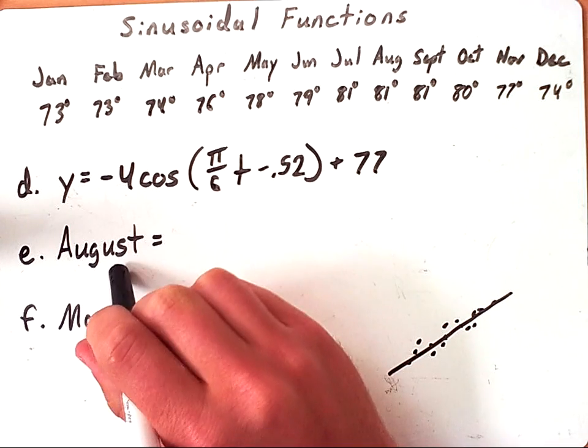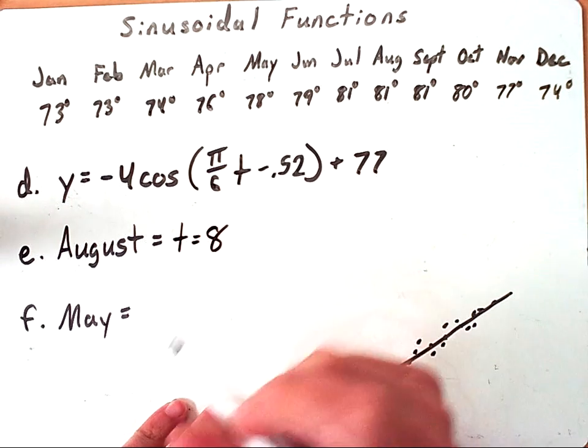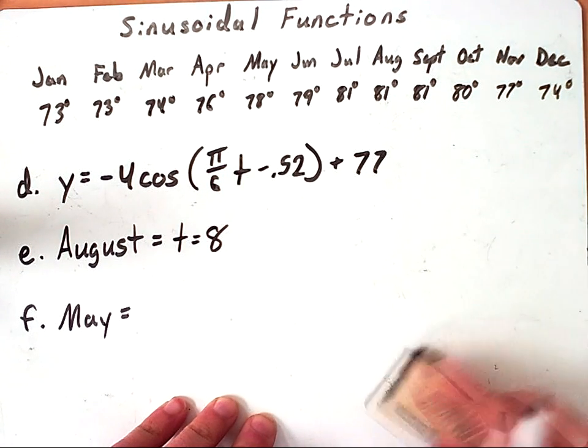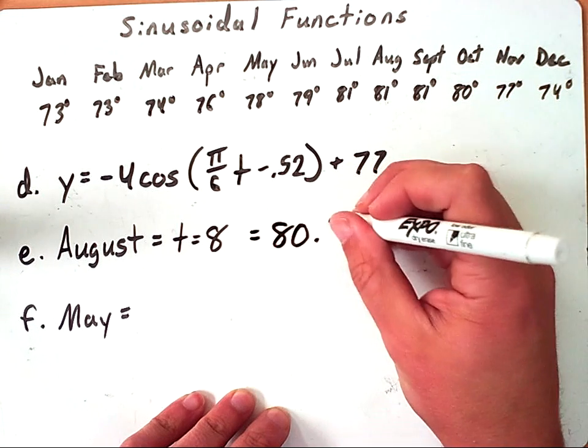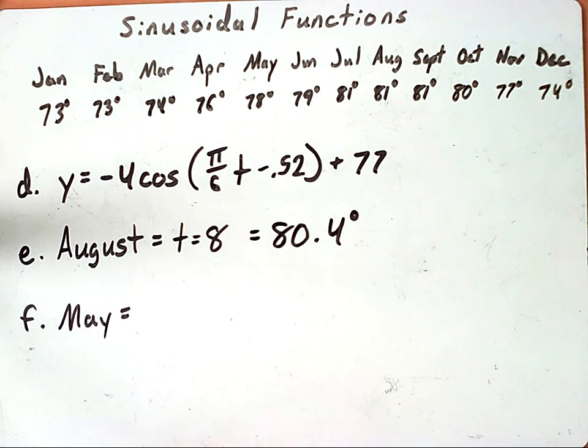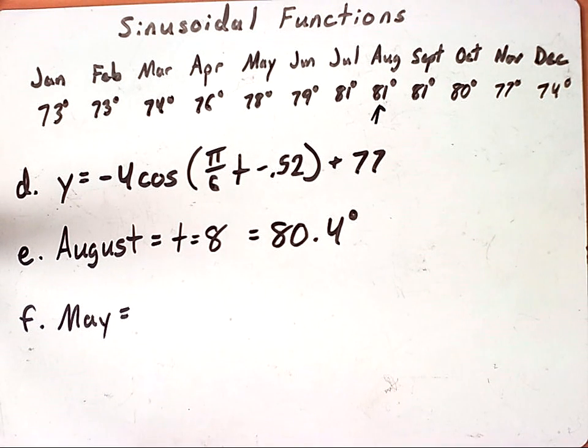If we wanted to find the temperature in August, I would need to plug in a value for t. Since August is the eighth month of the year we would simply plug in 8 into my equation. If I punch this in, negative 4 cosine π over 6 times 8 minus 0.52 plus 77, we would get 80.4 degrees. If we wanted to look and see how well our model compared with the actual temperature in August, we would see that our model is pretty accurate. Our model predicts 80.4 degrees and we actually had a temperature of 81 degrees in August.